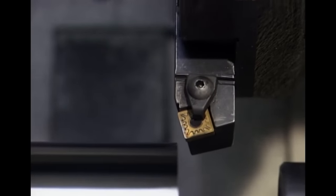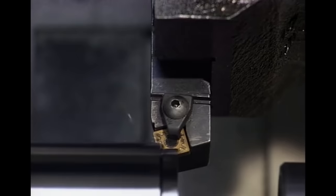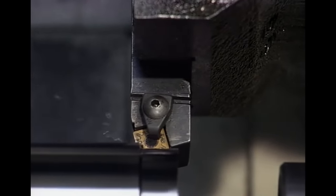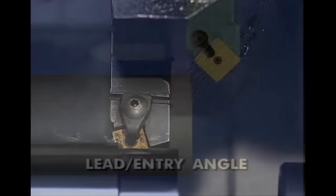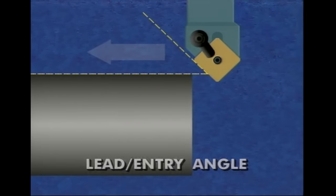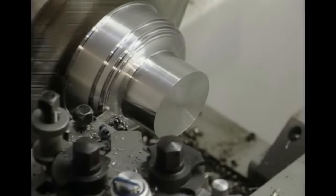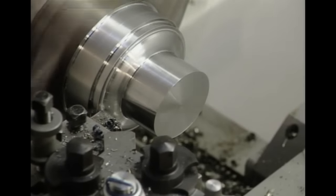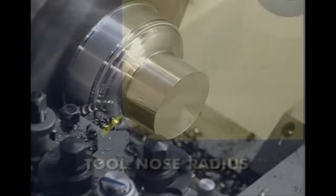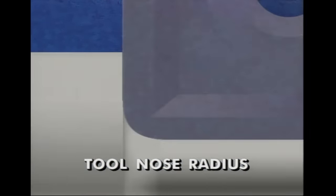In addition to the angles built into an insert and a tool holder, the angle at which the primary cutting edge of the insert enters the workpiece — called the lead angle — is also important. The lead or entry angle is the angle between the direction of the cutting tool feed and the cutting edge. Sometimes the workpiece shape determines the lead angle, and it also influences the variety of cuts that may be taken with that tool. The tool nose radius must be equal to or smaller than the smallest radius on the workpiece for cuts made with that tool.